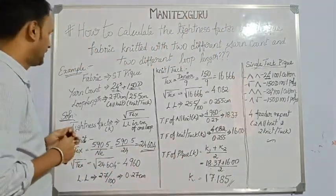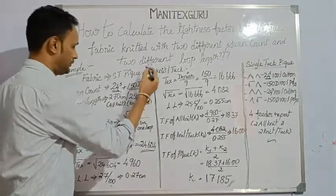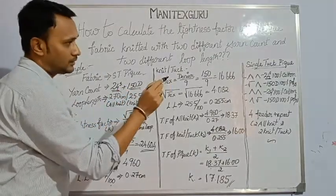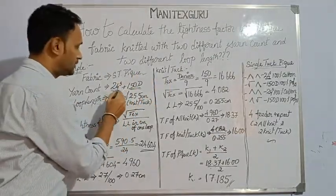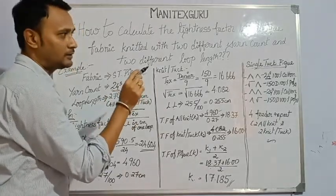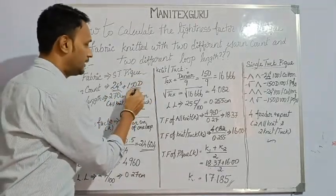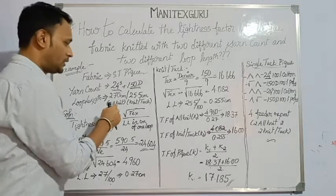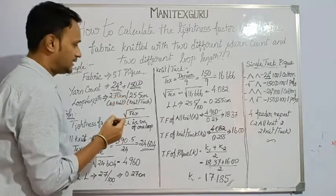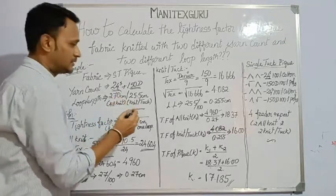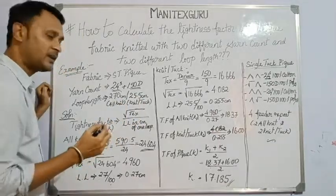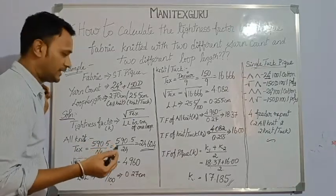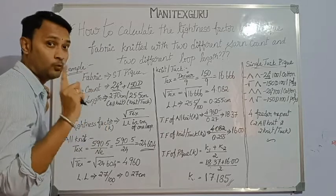Let's solve the calculation. The fabric is a single tuck PQ, and as mentioned, it is knitted with two different yarn counts. All the all-knit structures are knitted with 24 Ne 100% cotton, and all the knit-tuck structures are knitted with 150 denier 100% polyester yarn. It is also knitted with two different loop lengths: all-knit with 27 cm and knit-tuck with 25.5 cm. The tightness factor K = √tex ÷ loop length (cm) for one loop.